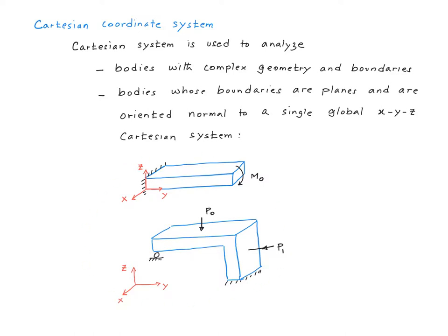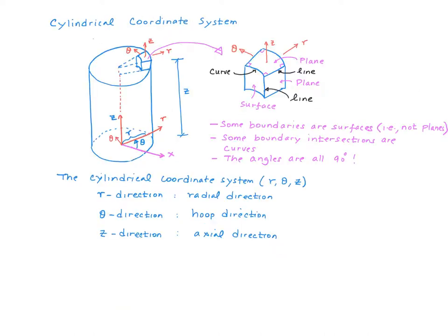When you use a Cartesian system in problems like these, you can very often simplify these problems into two-dimensional problems. Now let's talk about the cylindrical coordinate system. Say we have a cylinder that looks like this. A cylindrical coordinate system is defined like this.